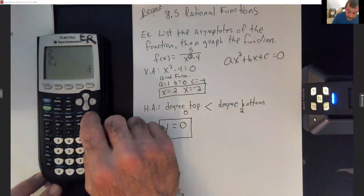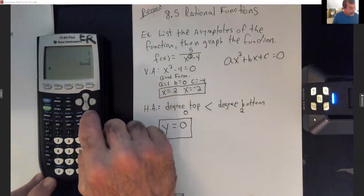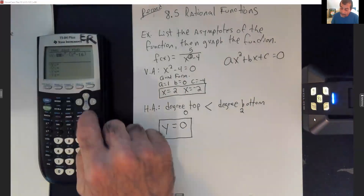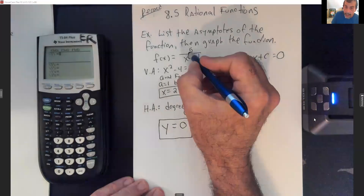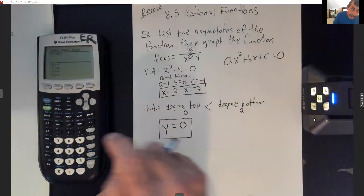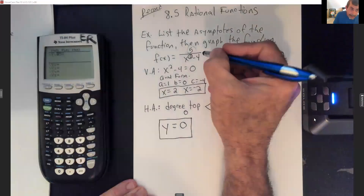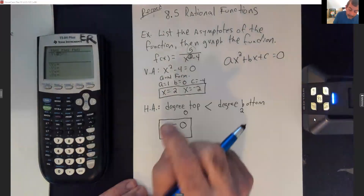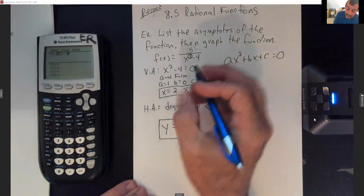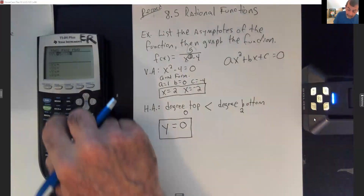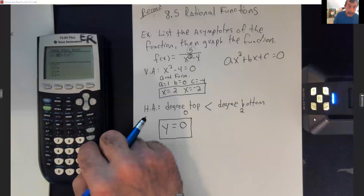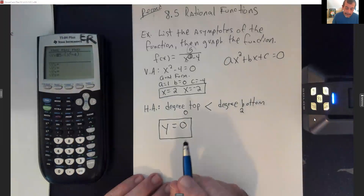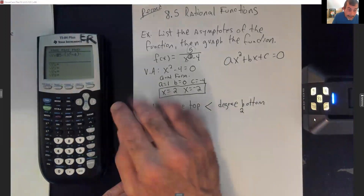Now I'm going to use the calculator to graph that. I'll go to y equals and clear it out. I've only got a single term on top, so I don't need parentheses — I'll punch my 5, then hit divide for the fraction bar. For the bottom, I'll put in parentheses because I've got more than one part: x squared minus 4, then close parentheses.